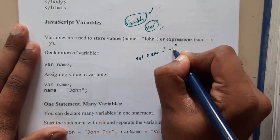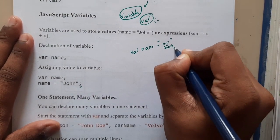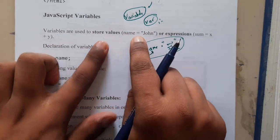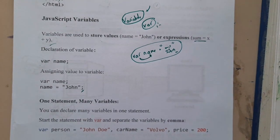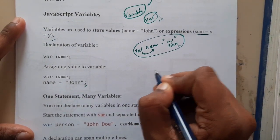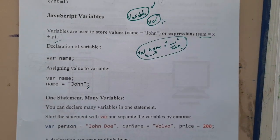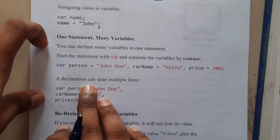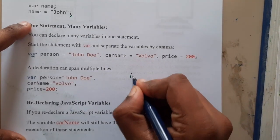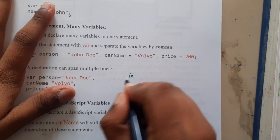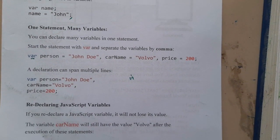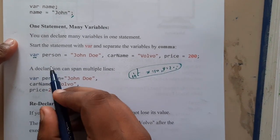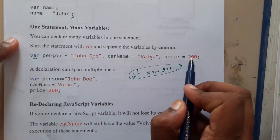Instead of int, float and all that confusion, in JavaScript you only use var. For example: var name = 'John' — you've stored your name. You can also do math: var x = 10, var y = 20, var sum = x + y. You can even declare multiple variables in one statement: var person = name, car = carName, price = price.